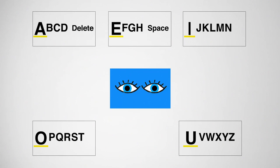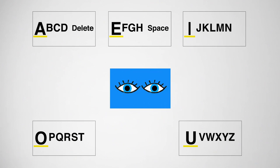Next, the user gazes straight up at the section containing the letter G. The communication partner reads the letters E, F, G. The user blinks when G is read to indicate the desired letter. To indicate a space, the user stares at the section containing the word 'space' and waits for the communication partner to read 'space,' then blinks to select it.